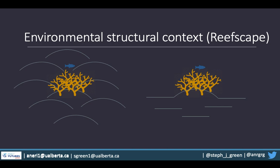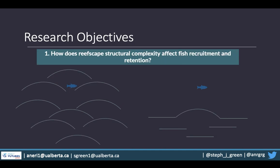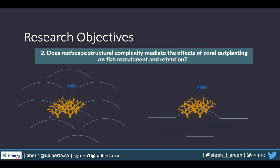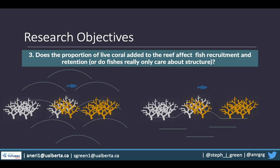Anari's work was really trying to disentangle the quality and quantity of a reef available for fish to recruit to in the context of coral restoration. She had three key research questions. First, without restoration, how does reefscape structural complexity affect fish recruitment and retention? Second, does that background structural complexity affect how coral outplanting influences fish recruitment and retention? And third, can we disentangle the role of structure versus chemosensory cues from adding live coral tissue — does the proportion of live coral added affect recruitment and retention in combination with background structural complexity?